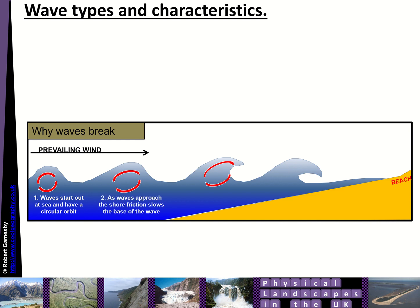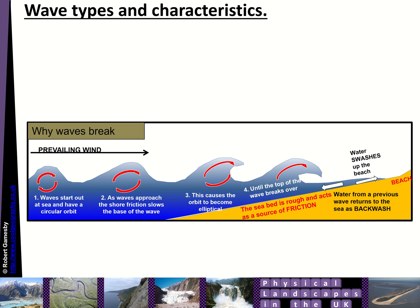Those waves continue to have their circular orbit, but as they approach the shore, friction from the base, from the seabed, slows down the wave. So the orbit becomes more elliptical and then eventually the top of the wave will break over. And then water will swash up the beach and water from a previous wave will return as backwash.